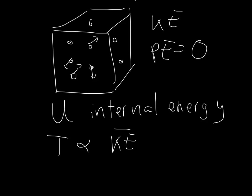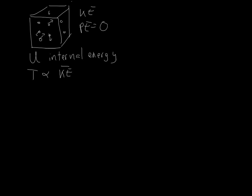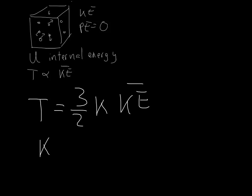We can make this more precise and give a formula for this. The constant of proportionality is pretty arbitrary because it depends on the units that we're using. So because of a historical accident, we say that temperature is three halves times this constant, called the Boltzmann constant, times the average kinetic energy of the particles in the gas. The Boltzmann constant has a value of 1.38 times 10 to the minus 23 joules kelvin to the minus 1, which makes sense because we want to get rid of the joules and get kelvins, the units for temperature.